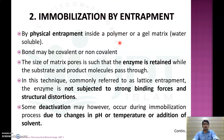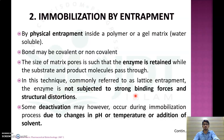The second method is immobilization by entrapment. In this, there will be a physical entrapment of the enzyme in a polymer or gel matrix. Usually a water-soluble gel or matrix is used to entrap the enzyme. The bond formed during entrapment may be covalent or non-covalent. The size of the matrix pore is adjusted so that the enzyme is retained while substrate and product molecules will pass through. This technique is commonly referred to as lattice entrapment. The enzyme is not subjected to too strong binding forces and structural distortion, but there may be some deactivation due to changes in pH, temperature, or addition of solvents.